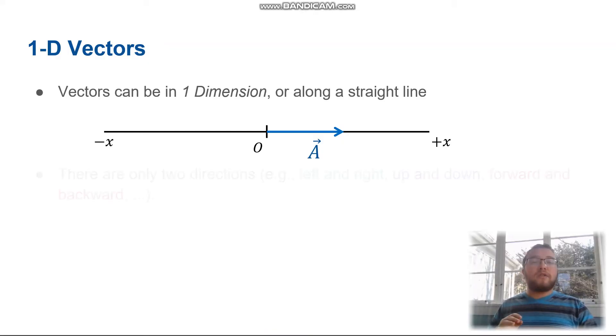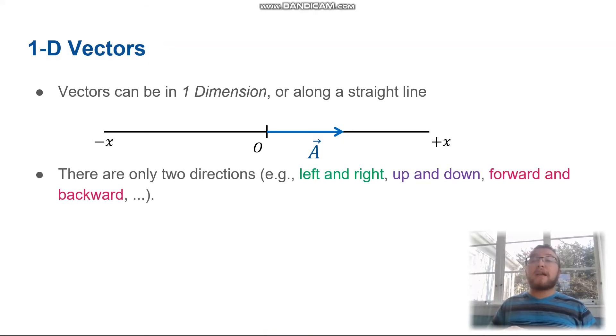1D vectors can only go in two directions, like left and right, or up and down, or forward and back. There's only two directions it can go, it has to stay on that same line.